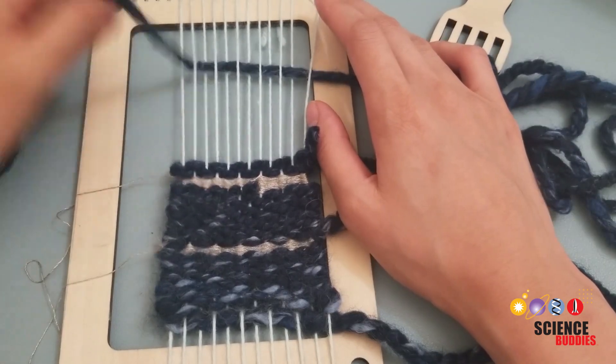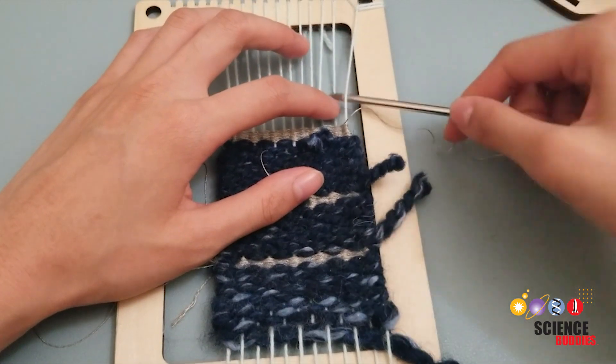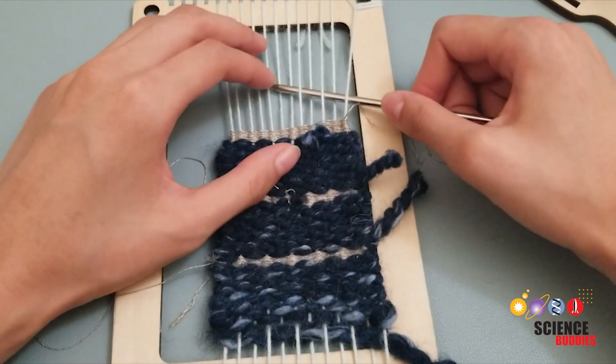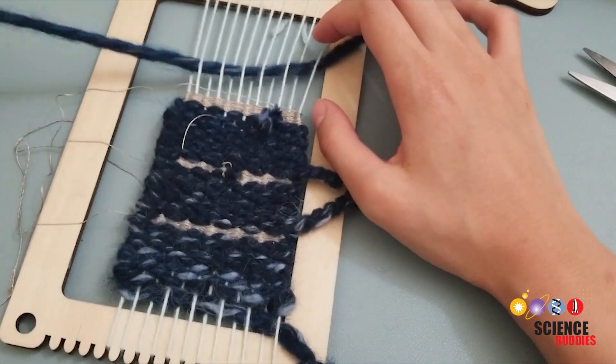Now it is time for another yarn section. Once done, start your conductive thread section again. Finish the weave off with the final section of yarn.